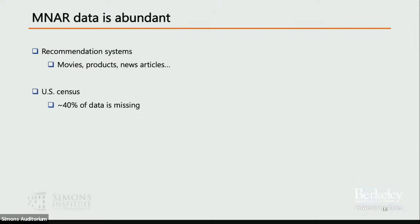This is an important problem because recommendation systems are everywhere — movies, products, news articles. With increasing polarization of the web, we should think carefully about what is being shown to whom at what time. Even the US census has approximately 40% missing data for sensitive columns like income and sexuality, and that data is clearly not missing at random. We need to think carefully about why data is missing when using matrix completion in these settings.